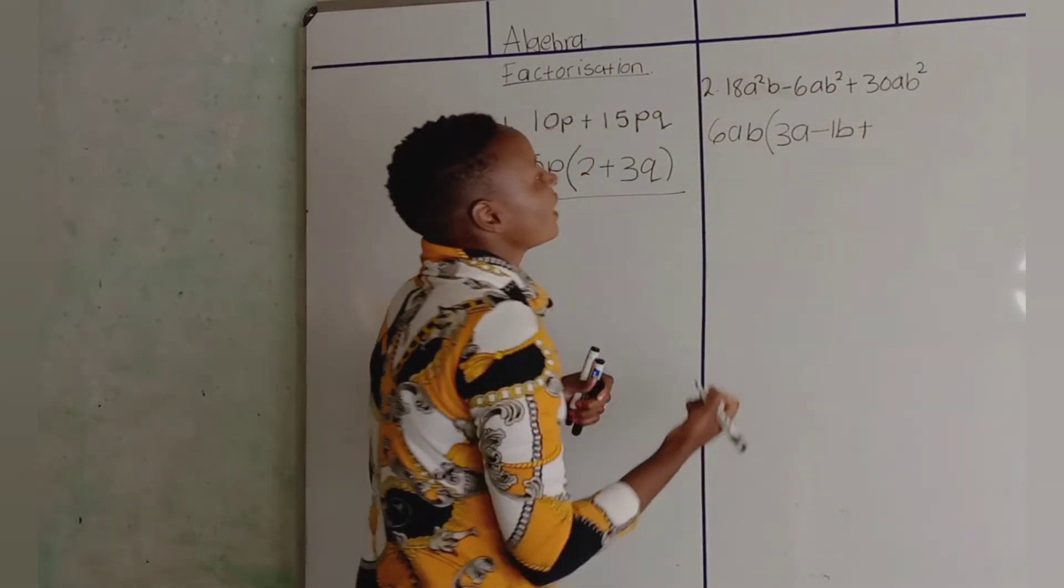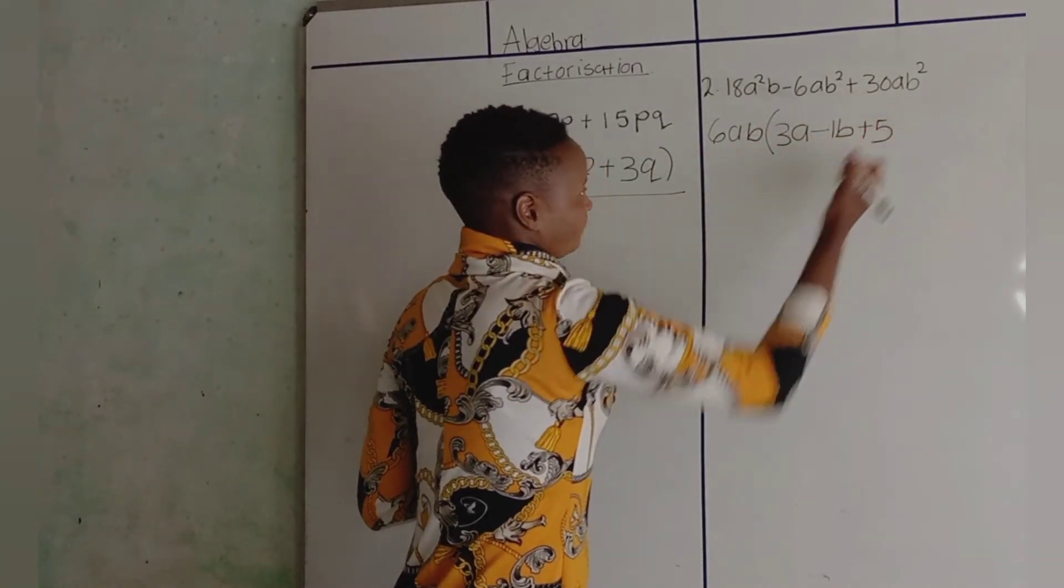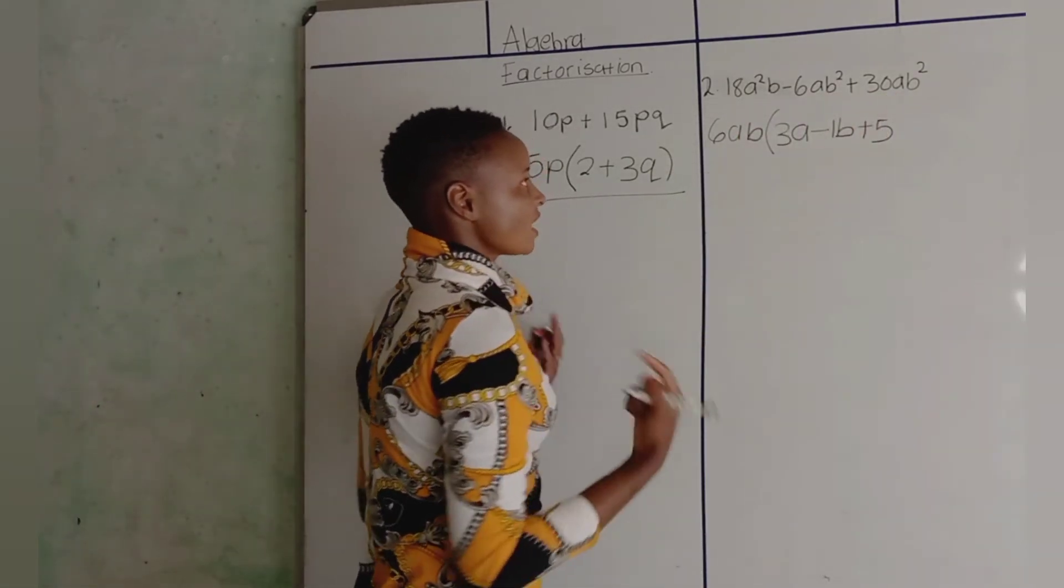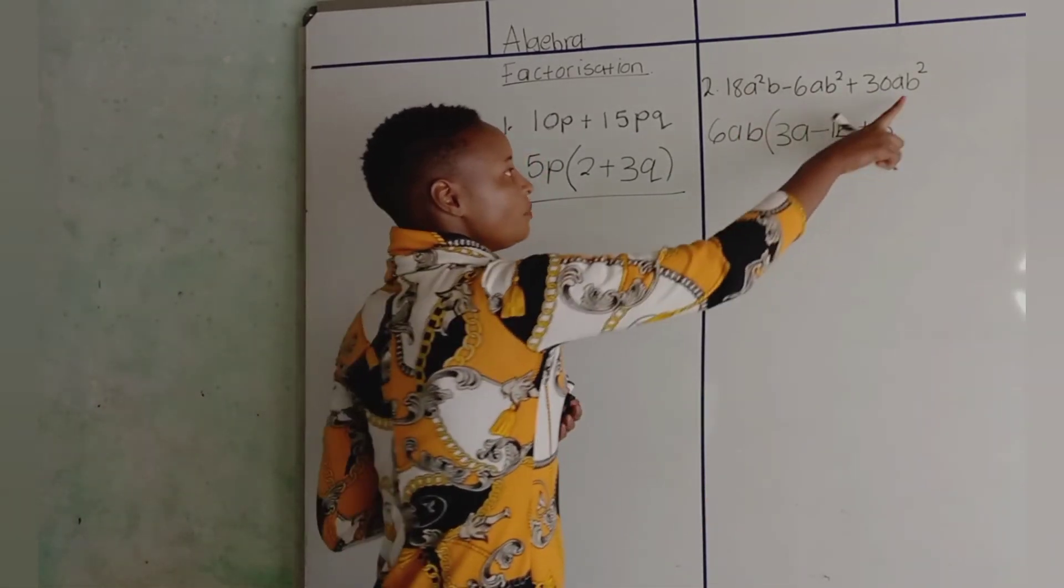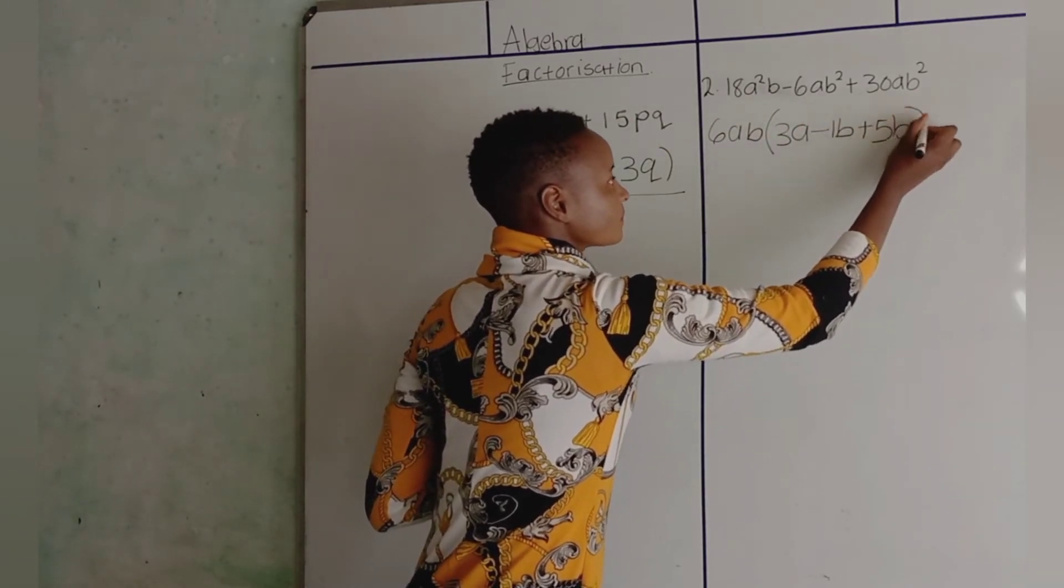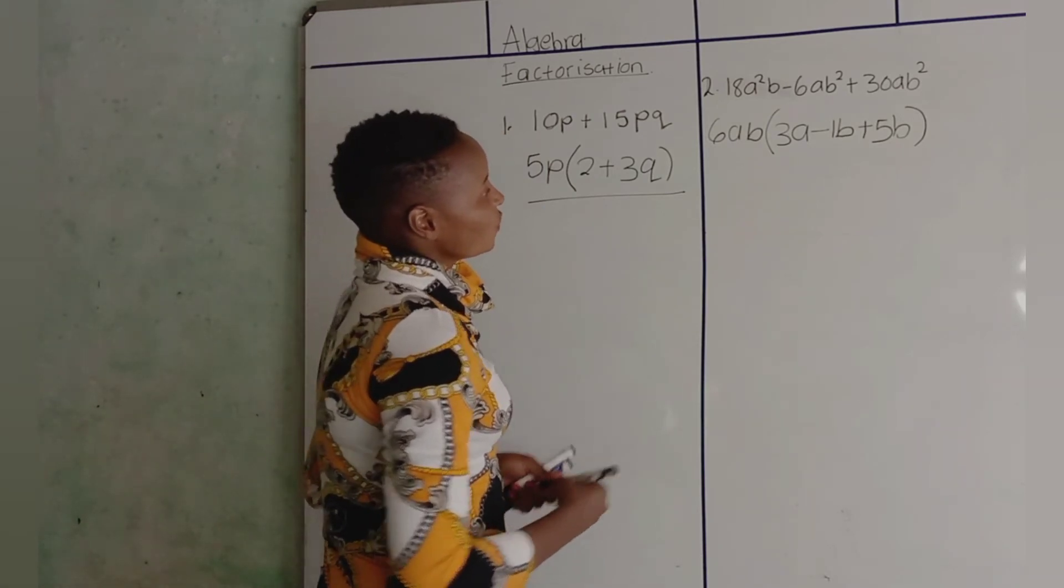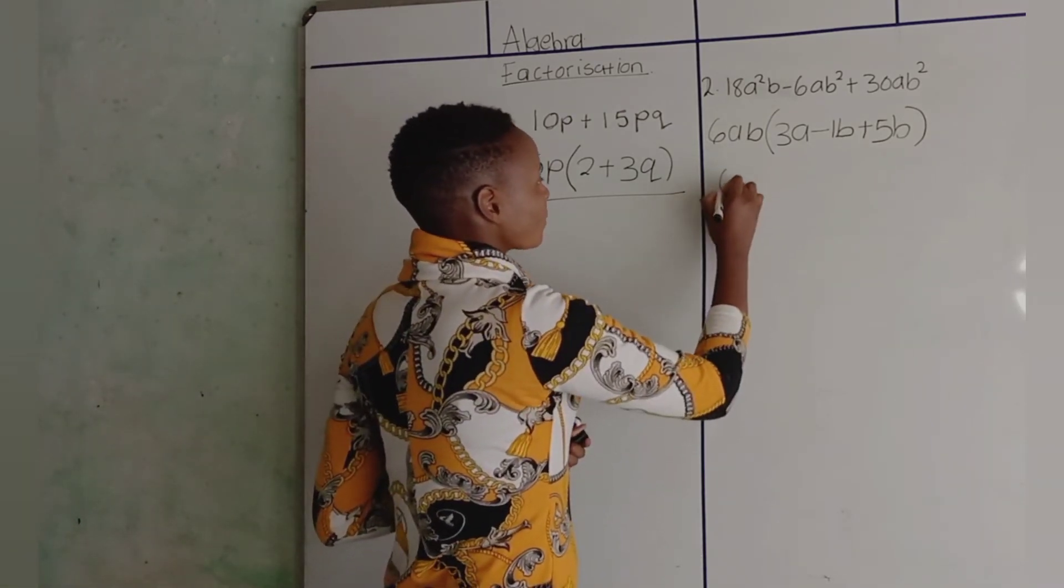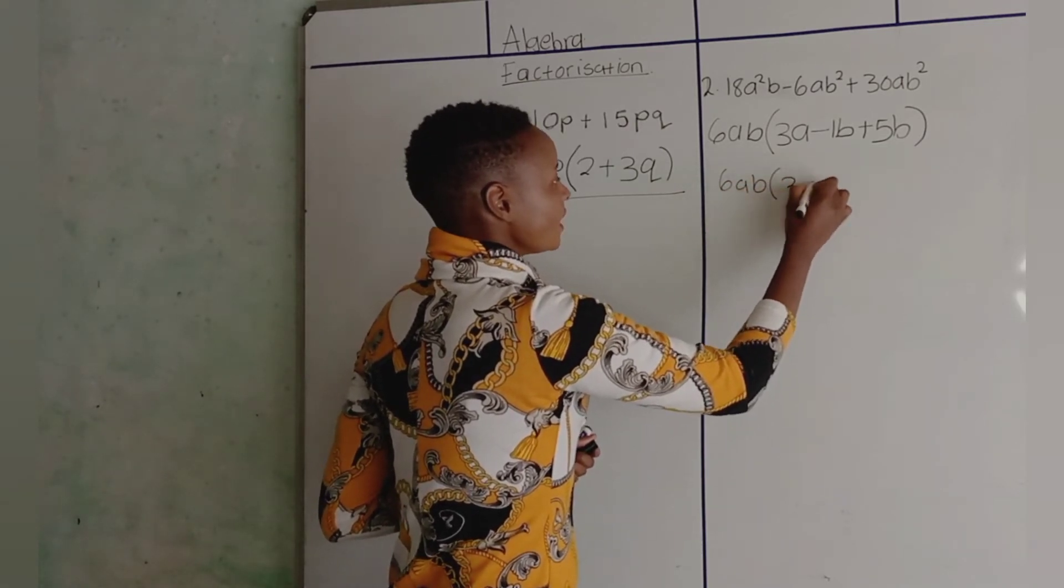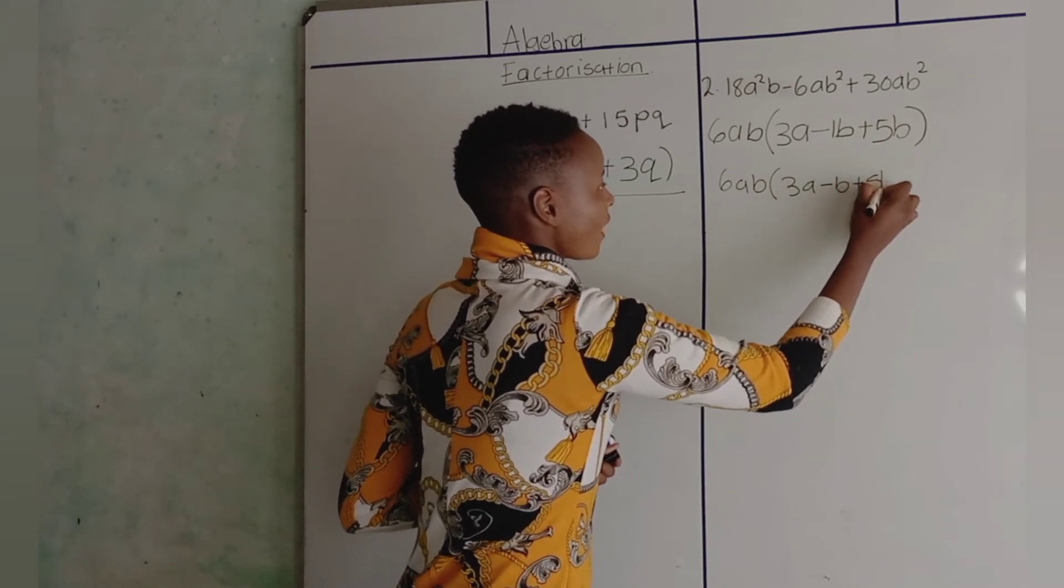Plus, 30 divided by 6 is 5. A and A cancel, you're left with A. And then, B squared divided by B, you're left with B. So, our answer, our final answer: 6AB open bracket, 3A minus B plus 5B.